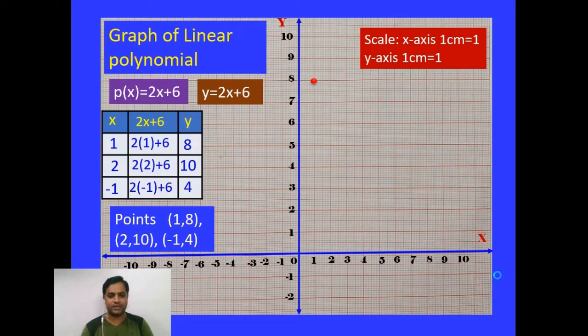Now, second point: (2, 10). Observe where it is plotted. 2 should be considered on x-axis vertically and 10 should be considered on y-axis horizontally. Hence the point will be located at that place.